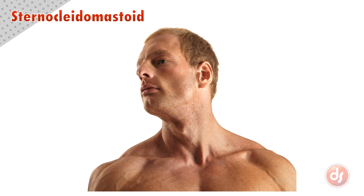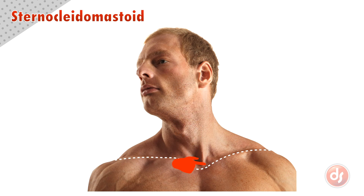Now let's find the sternocleidomastoid on the surface. The landmarks will help us place the muscle. This curved depression is called the pit of our neck, and it's the top of our sternum. On either side, we see the bony landmark of the clavicles moving out to the shoulder. Just inside the clavicle, we see the strong line of the sternal portion as it moves up to the mastoid process behind the ear. In general, the sternal portion will be a pronounced shape on the surface.